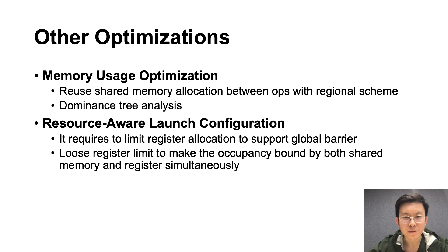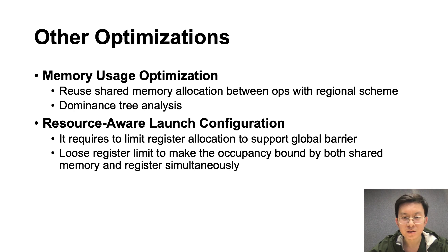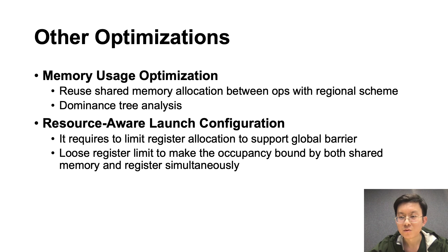There are also other optimizations in the compiler. First, we apply memory usage optimization to reuse shared memory allocation between ops with regional scheme using dominance tree analysis, which helps to increase potential parallelism. For launch configuration, it requires limiting register allocation to meet global barrier requirements. We use a loose register limit so that occupancy is bound by both shared memory and registers simultaneously, helping to allocate as many registers as possible to increase parallelism.